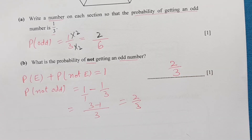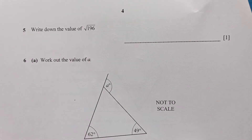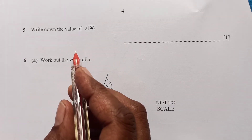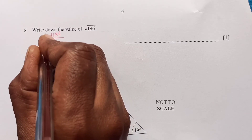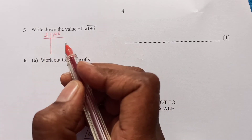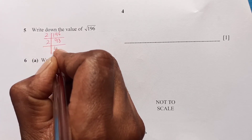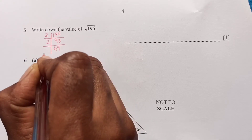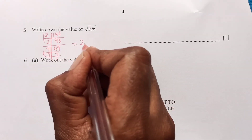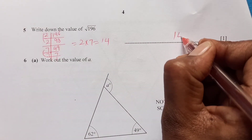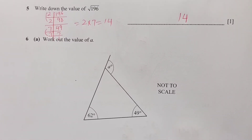Question five: write down the value of the square root of 196. The direct answer is 14. We can verify by prime factorisation: 196 divided by 2 gives 2 times 98, continuing we get 2 times 2 times 7 times 7. Making pairs, we get 2 times 7 which is 14. So the square root of 196 is 14.